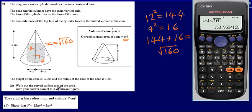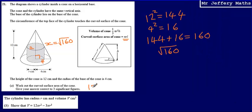We're asked to give it correct to three significant figures. So we're going to say that this is 159. And that is centimeters squared because we're talking about surface area. So the answer for part A is going to be 159 centimeters squared.